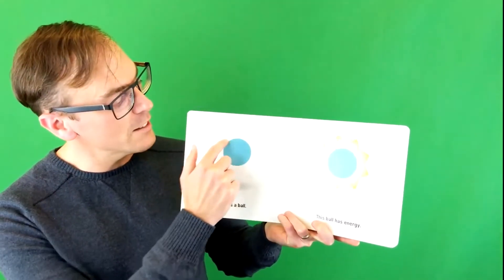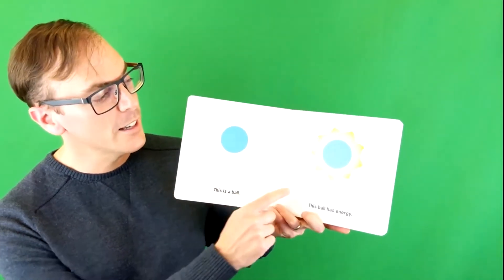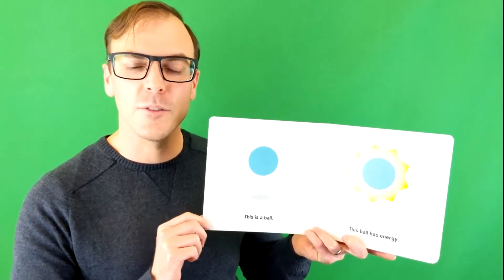This is a ball. You can see the shape is round. This ball has energy. Tony? No, it's Phil. Phil, do you have a question? Yeah. Can I go to the toilet? Yes, yes, you may, Phil. Go ahead. Thank you, Phil.